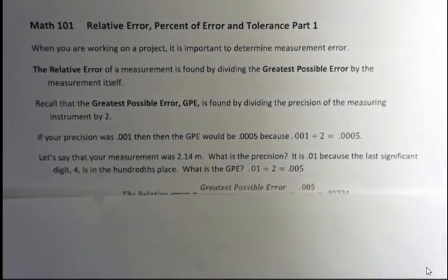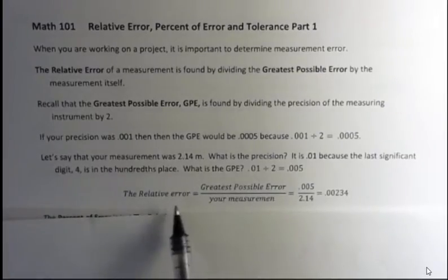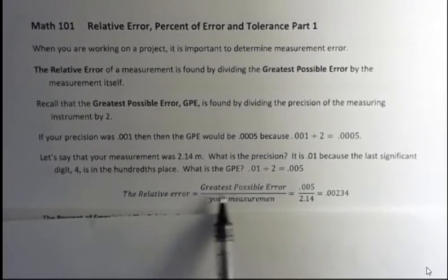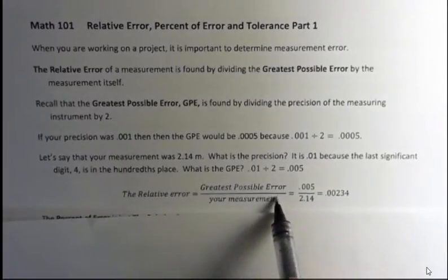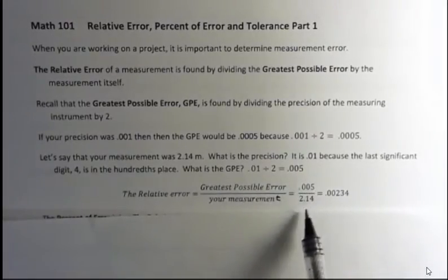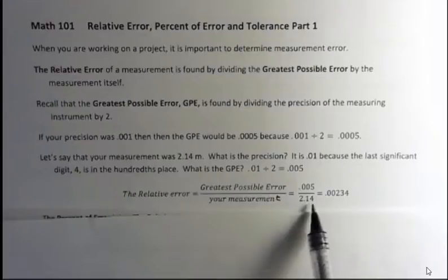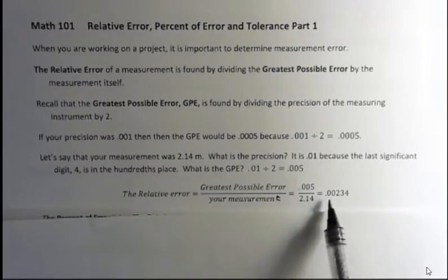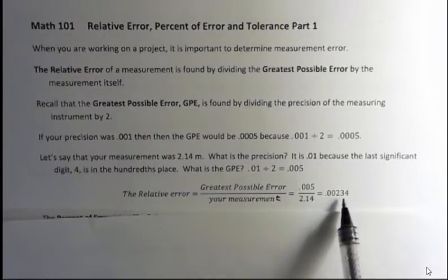So now all we're going to do to find the relative error - the relative error is the greatest possible error divided by your measurement. So our greatest possible error was 0.005, and your measurement was 2.14. If I divide those, I get 0.00234.